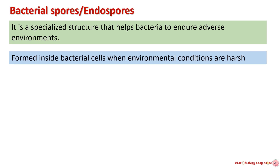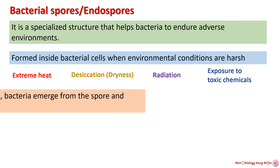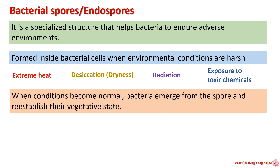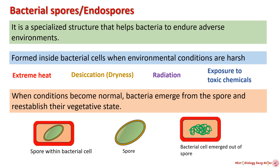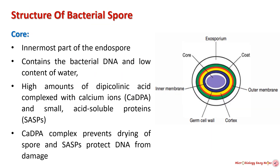Bacterial spores, also known as endospores, are specialized and highly resistant structures that allow bacteria to endure harsh environmental conditions such as extreme heat, dryness, radiation, and exposure to toxic chemicals. The vegetative cell itself is not strong enough to face challenging environmental situations, therefore it forms spores as a protective strategy. When conditions become favorable, bacteria come out of the spore and reestablish their vegetative state.